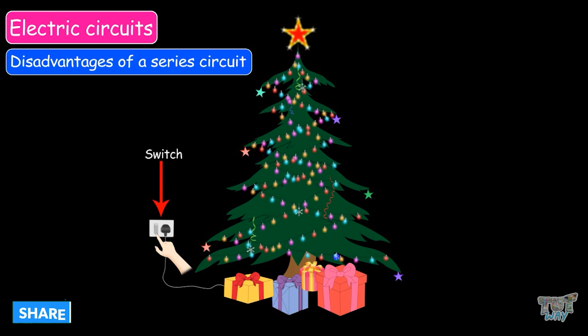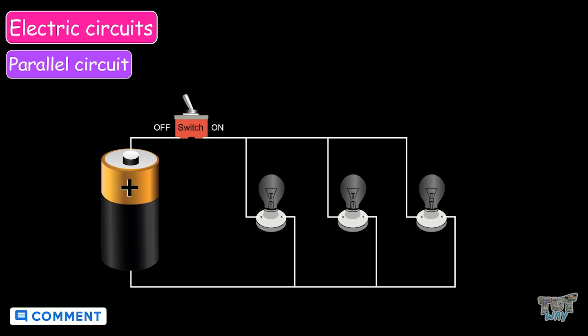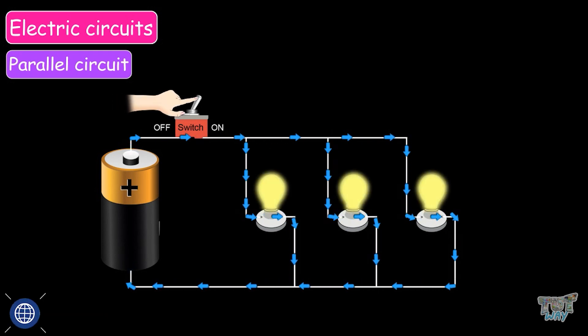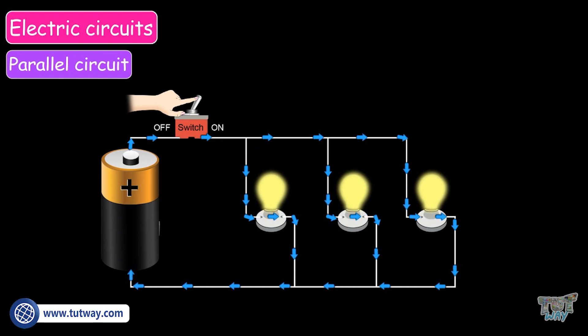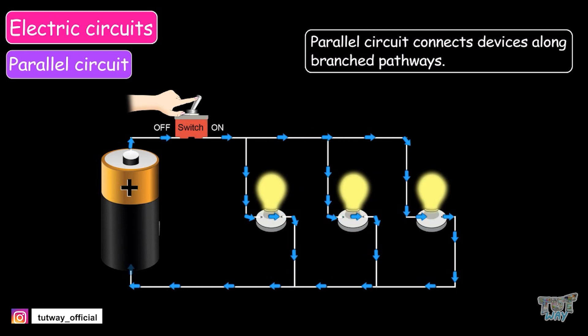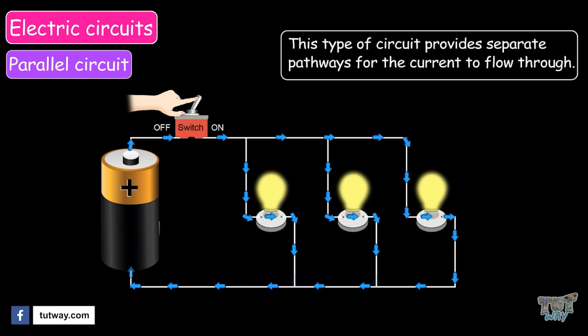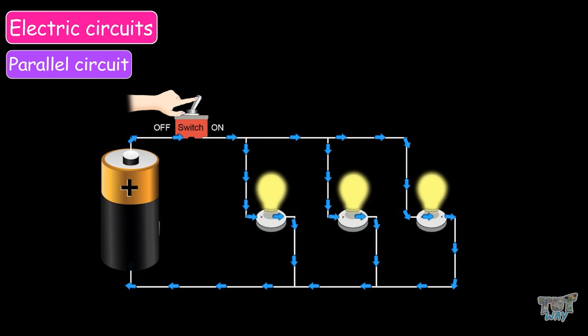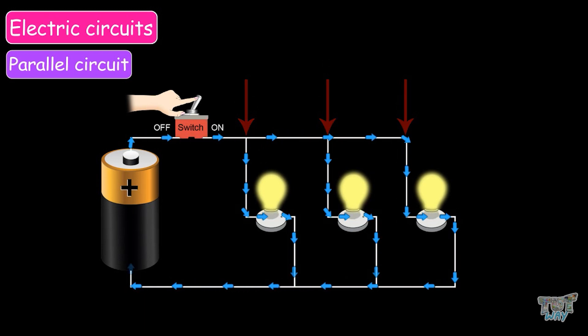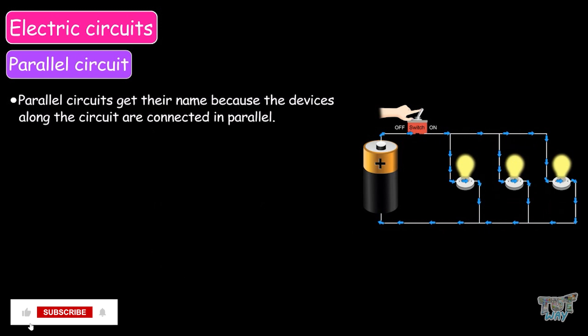Now let's learn another kind of circuit — a parallel circuit. A parallel circuit is a closed circuit in which the current flows through two or more branches at the same time, and then recombines via a common path to complete the circuit. Parallel circuits connect devices along branch pathways, providing separate pathways for the current to flow through. As you can see in the image, the current has three parallel paths to flow through. Parallel circuits get their name because the devices along the circuit are connected in parallel.